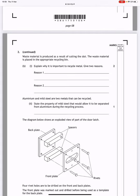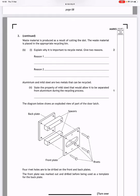Aluminium and mild steel are two metals that can be recycled. State the property of mild steel that would allow it to be separated from aluminium during the recycling process. Well, if it's a steel, it contains iron so it'll be magnetic.